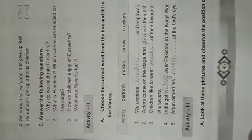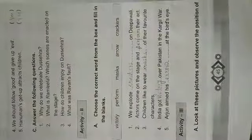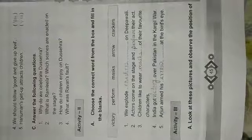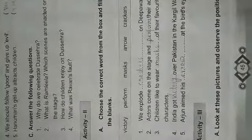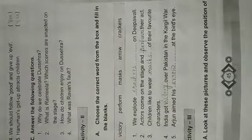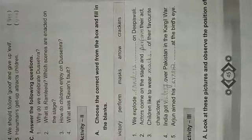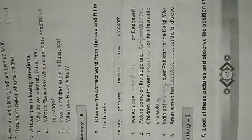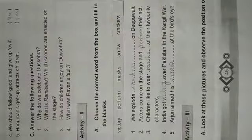Come to activity 2. Number A: Choose the correct word from the box and fill in the blanks. Number 1: We explode crackers on the Pavli. Number 2: Actors come on the stage and perform their act. Number 3: Children like to wear masks of their favorite characters. Number 4: India got victory over Pakistan in the Kargil war. Number 5: Arjun aimed his arrow at the bird's eye.